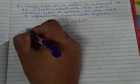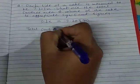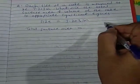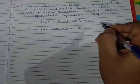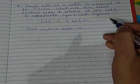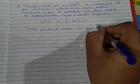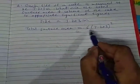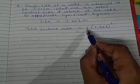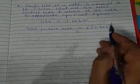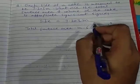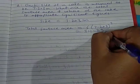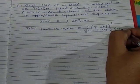Total surface area. What is the formula? 6 into side squared. So that is 6 into (7.203)². This gives us the total surface area. When you solve it, you will get the answer as 311.299254 meter square.